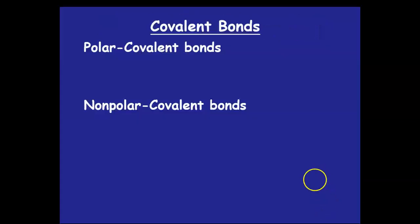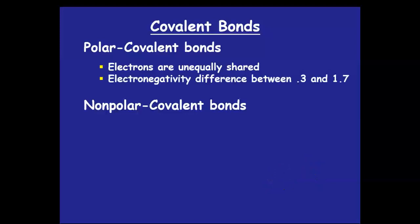So, polar covalent bonds, the electrons are unequally shared. The electronegativity difference there is between 0.3 and 1.7. If it gets higher than 1.7, then you're getting into a mostly ionic bond. We're really trying to focus on covalent bonds here.